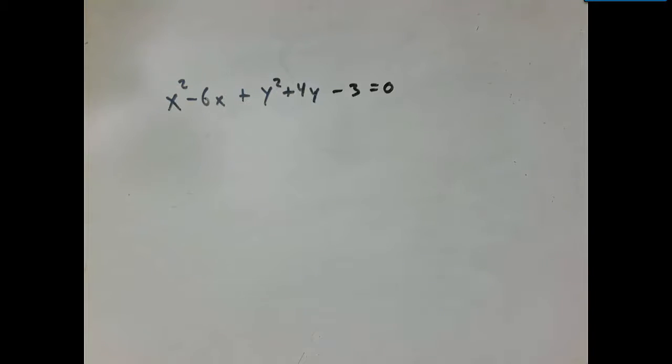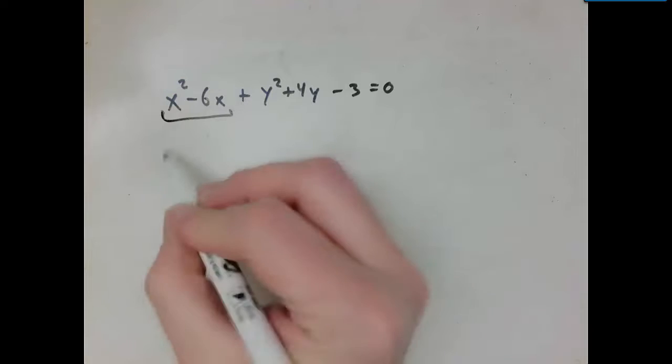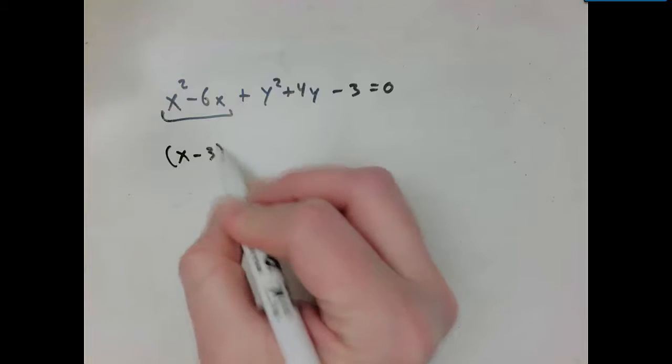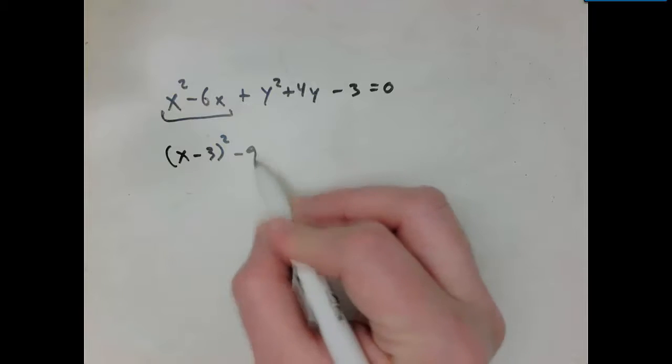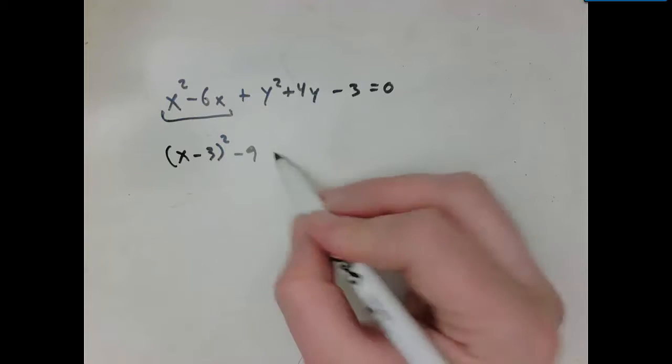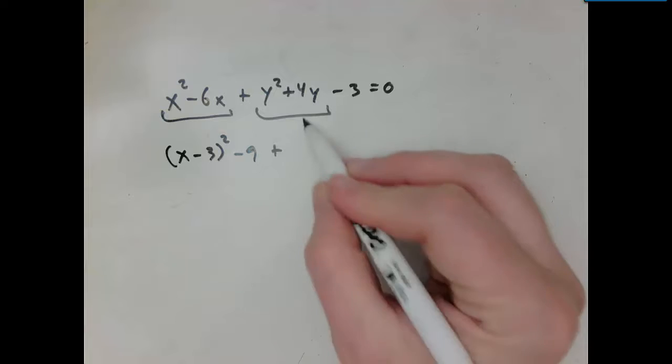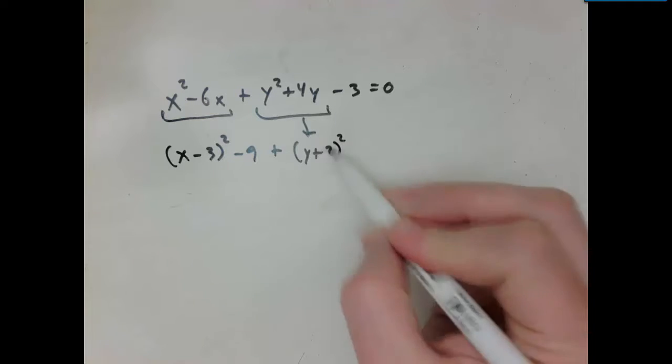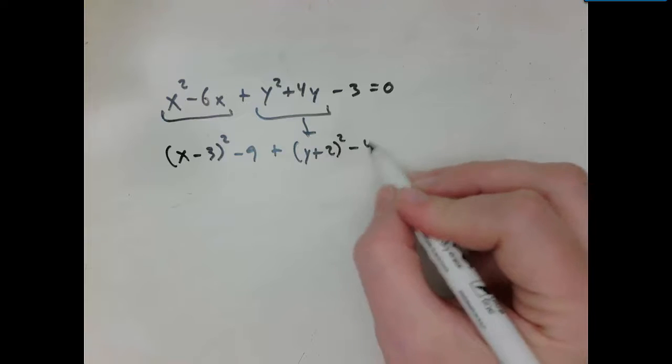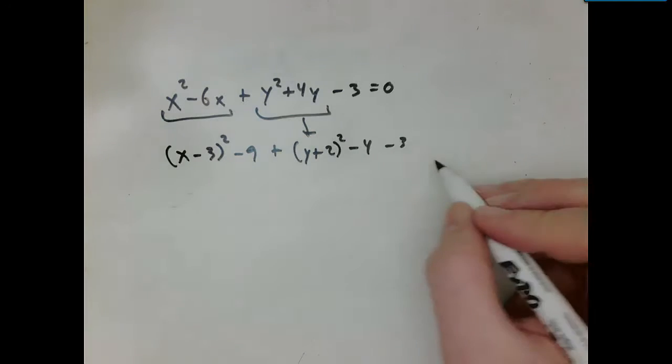Alright, here we go. So if I complete the square on this side, I've got x minus 3 squared. That's going to introduce a positive 9, so I'll subtract 9 to compensate. Here, this is going to give me y plus 2 squared, which is going to introduce an additional 4, so I'll subtract 4 to compensate. And I've still got my minus 3 over here.